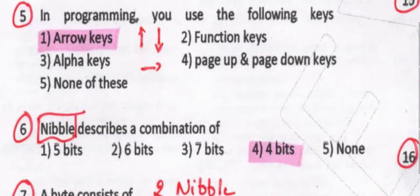In programming you use arrow keys — upper arrow, lower arrow, and left and right arrows, these are all arrow keys. These are used in programming. In the case of functional keys, we have F1 to F12. Alpha-numeric keys are A to Z and 0 to 9. These are all alpha-numeric keys, but these are not used in programming.